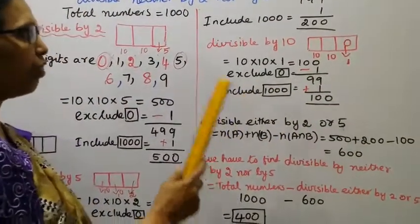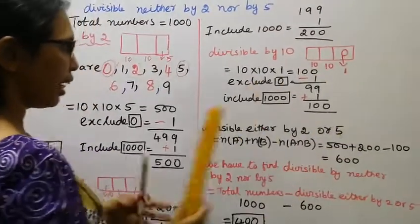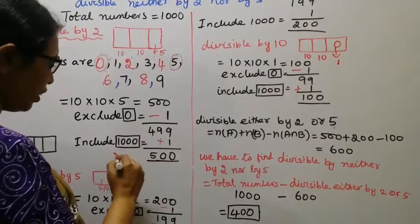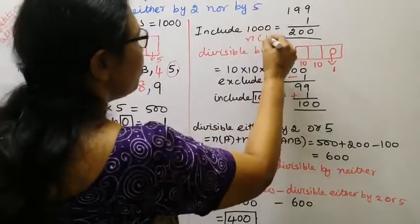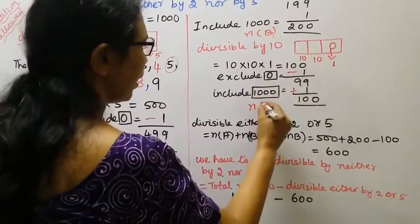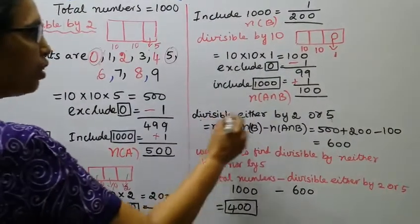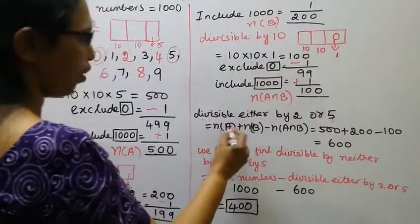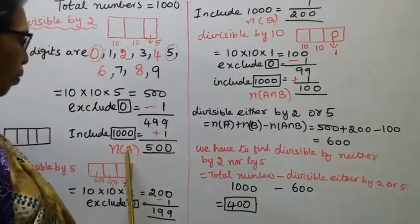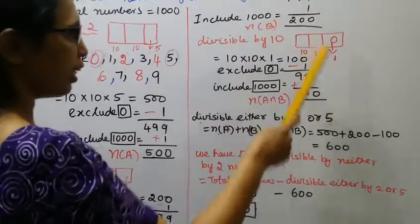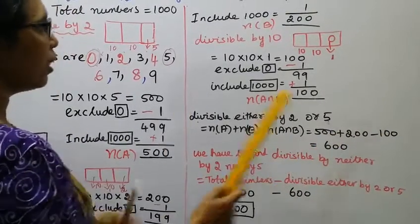Divisible by 2 or 5. n(A) union n(B) equals n(A) plus n(B) minus n(A) intersection n(B). 500 plus 200 minus 100. 500 plus 200, 700 minus 100, 600.